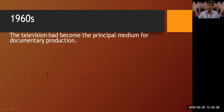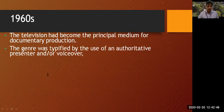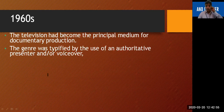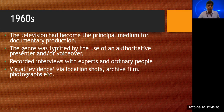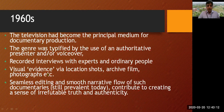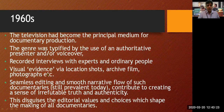By 1960, television had become the principal medium for documentary production. Most films produced were broadcast on television. The genre was typified by the use of an authoritative presenter or voiceover — the voiceovers you see in documentaries today started in the 1960s — along with recorded interviews with experts and ordinary people, visual evidence via location shots, archive films and photographs. Seamless editing and smooth narrative flow created a sense of irrefutable truth and authenticity, though this disguised the editorial values and choices shaping all documentaries.